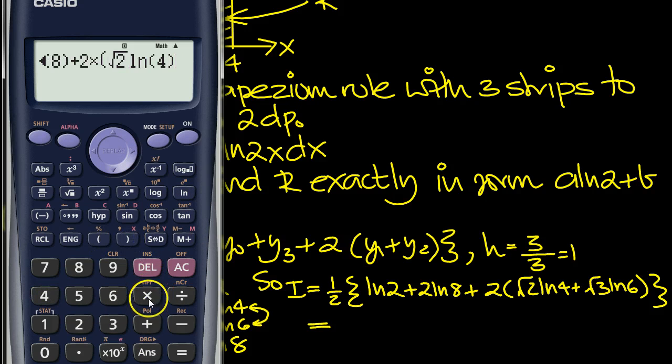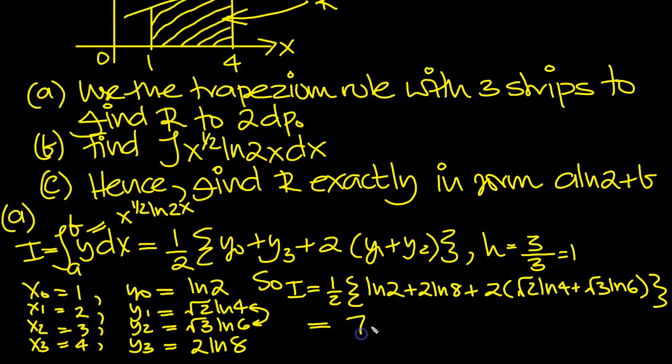ln of 6, close bracket for the log, close bracket for the 2 times, and close bracket for the half of. Equals 7.4899, which to 2dp is equal to 7.49.